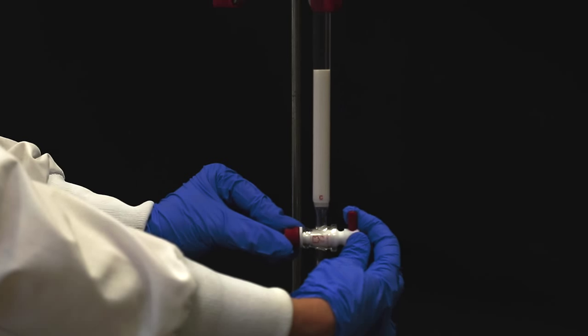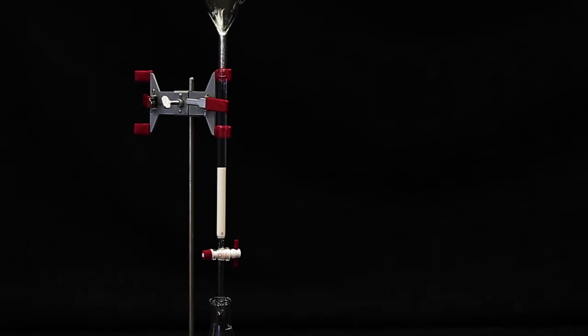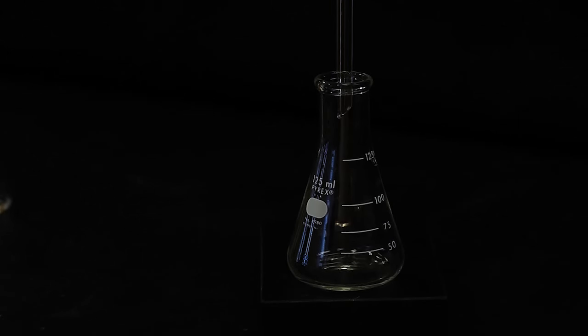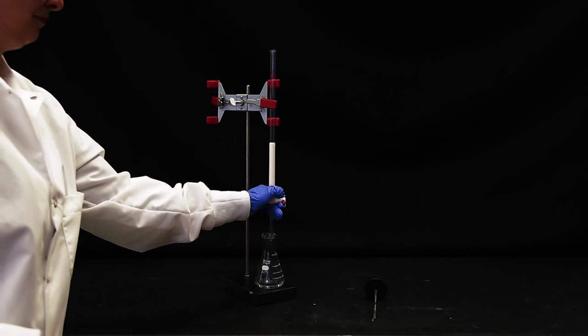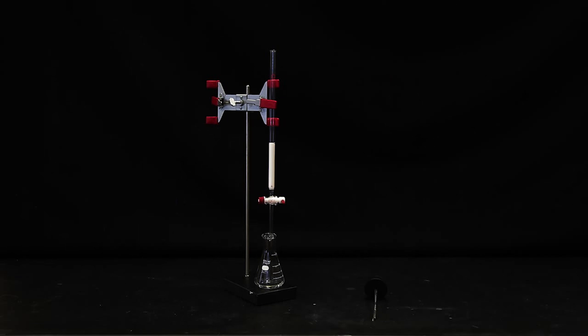Open the stopcock. The excess solvent collects in the Erlenmeyer flask placed beneath the column. When all of the alumina has been transferred to the column, drain the excess hexane until the solvent line reaches the top of the alumina. Close the stopcock on the column. Remove the glass funnel.